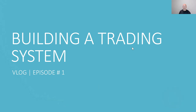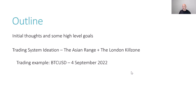Today's video is about building a trading system — the very first episode in my vlog. I'm going to start by going through some initial thoughts and high-level goals for this vlog, and then we're going to look at trading system ideation — just playing around with some ideas that will hopefully lead into a trading system we can use and start putting through proper testing and eventually implementation. What I'm looking at first is the Asian trading range and the London Killzone, using a trading example on Bitcoin from the 4th of September 2022.